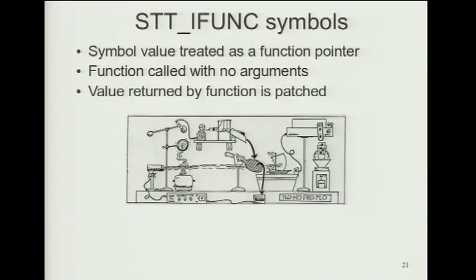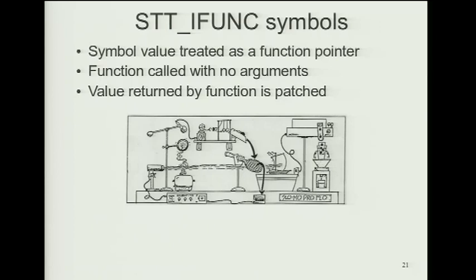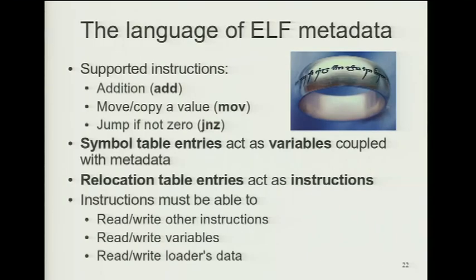Indirect functions (IFUNC) are a relatively new type in the GCC toolchain. The value of an IFUNC symbol is treated as a function pointer: the function is called, and whatever it returns is written into the offset specified in the relocation entry. We can get arbitrary computation from this type, and it allows decisions to be made at runtime about what address or value to patch. This is where we start building our language — the ELF metadata language has three basic instructions: add, move/copy value, and jump-if-not-zero. We can start getting branches from just metadata, with no code changes.